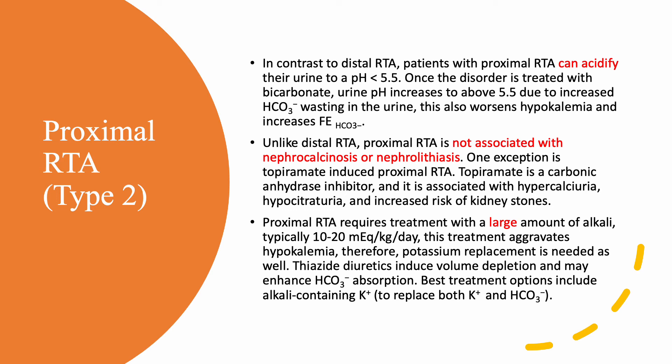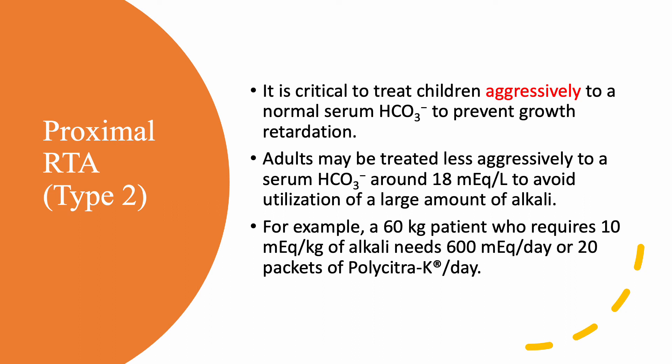To treat proximal RTA, give potassium until the patient is potassium-replete, then give alkali. The problem is that when giving bicarbonate you waste more bicarbonate, so you end up needing to give a large amount of alkali — 10 to 20 milliequivalents per kilogram per day — and you also have to replace potassium. Thiazides can cause volume depletion and may enhance bicarbonate reabsorption by the proximal tubule. Children should be treated aggressively to normalize serum bicarbonate; otherwise they will have short stature and growth retardation. Adults may be treated to a bicarbonate of 18 to limit the amount of alkali required.